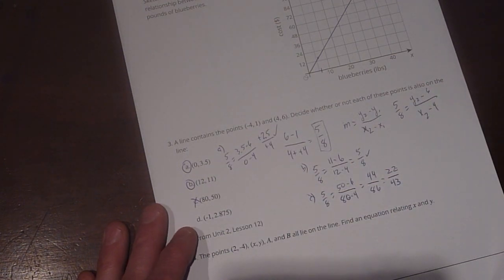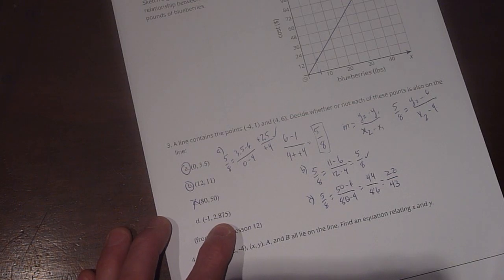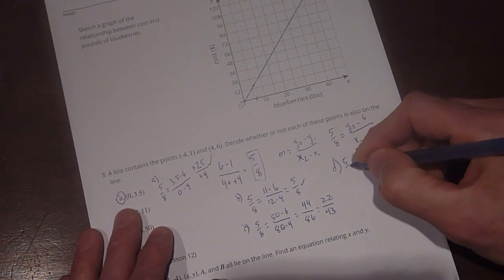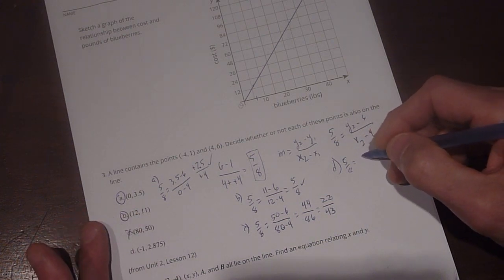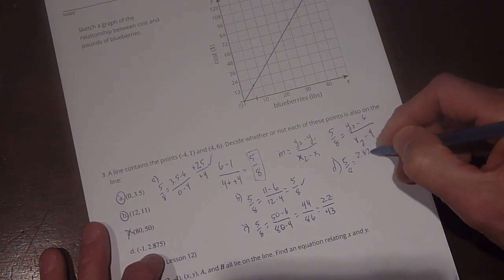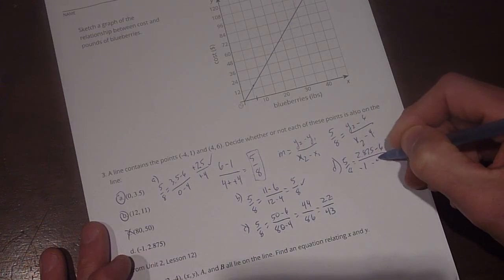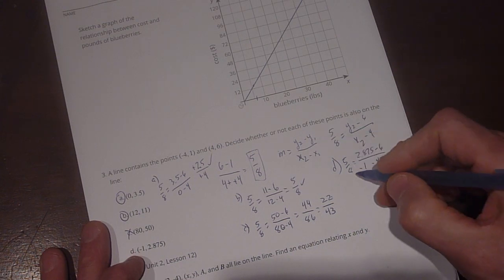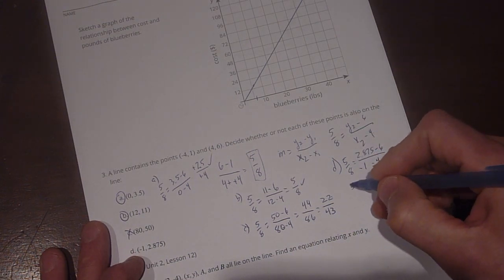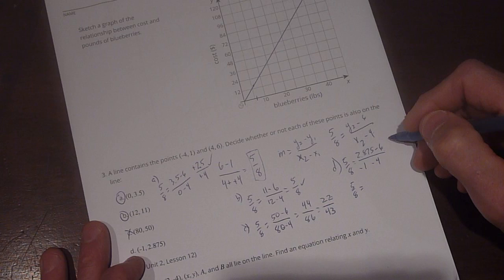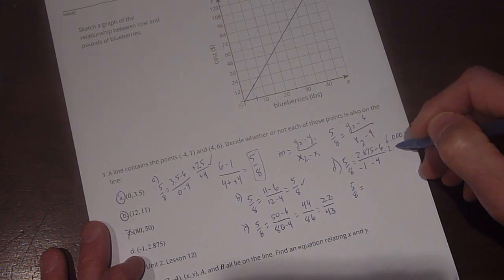Okay, now D is (-1, 2.875). So then we're going to say for D, does 5/8 equal (2.875 - 6) divided by (-1 - 4)? Alright, so we look at our subtraction again and we say for those, 5/8 equal 2.875 minus 6.